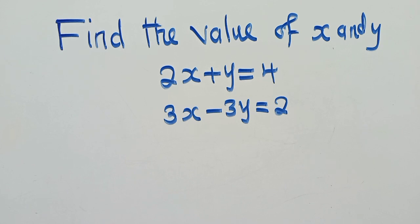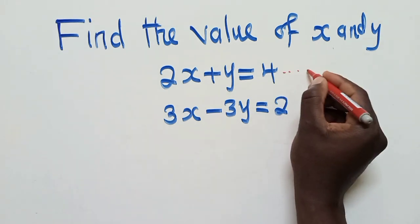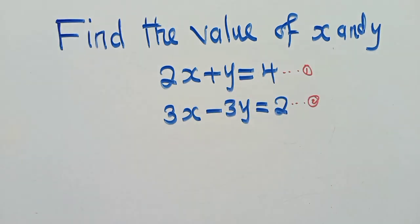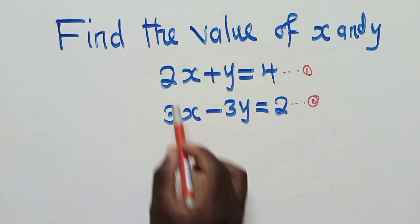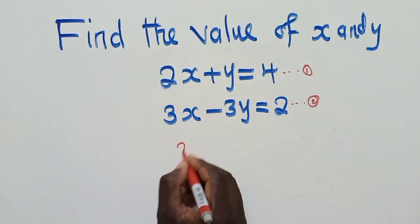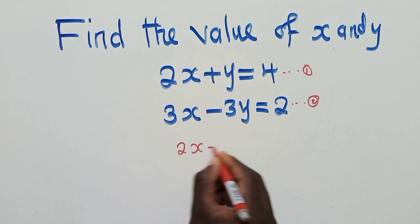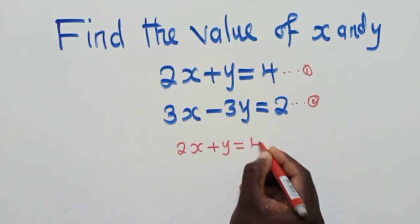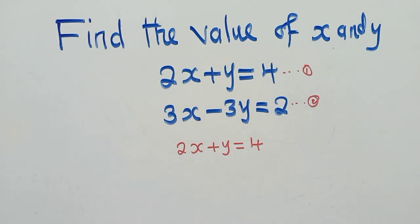Okay, this is called substitution method. So if you can see nicely here, we've got equation 1 and equation 2. There are two equations. So between the two equations, pick one of the equations that you start working with. So I'll get the first one, which is 2x plus y is equal to 4. So I've gotten the first one.